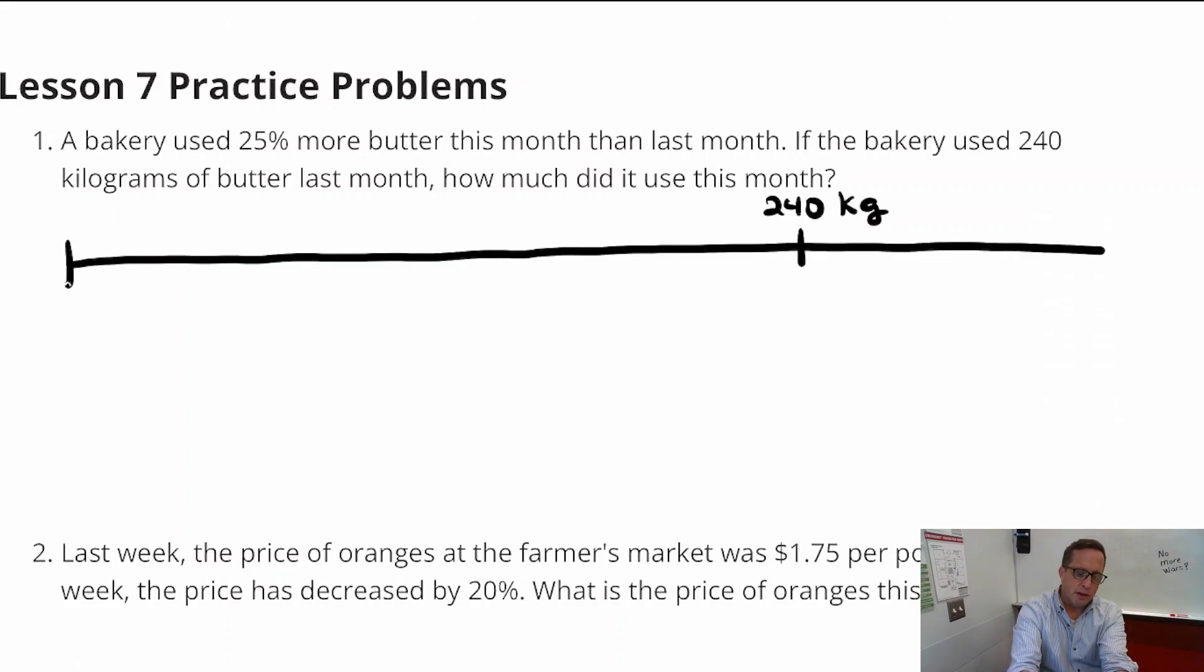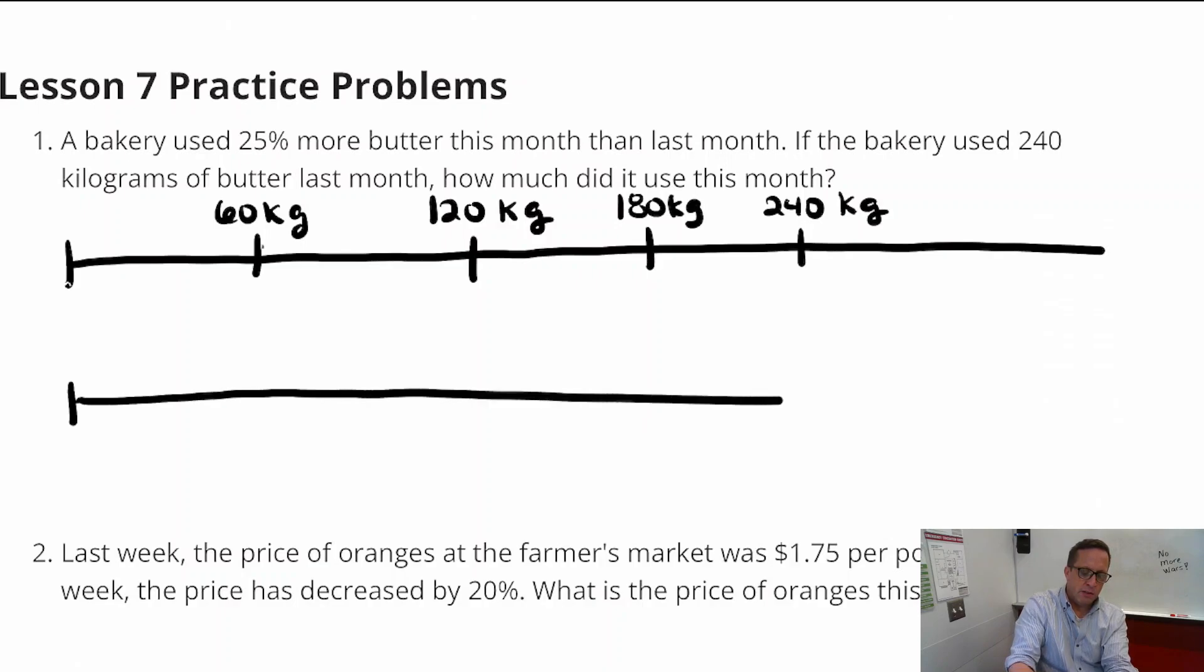Alright, so I'm eyeballing this. That's about halfway, so that is half of 240. That's 120 kilograms. And then let's cut the halves in half. So half of 120 is 60. I'll go 60 more than 120 for that one. That's going to be 180 kilograms.